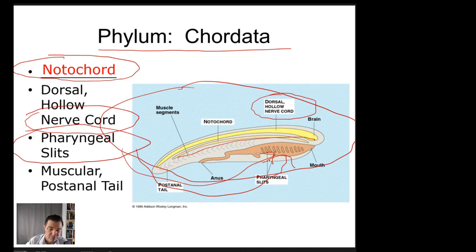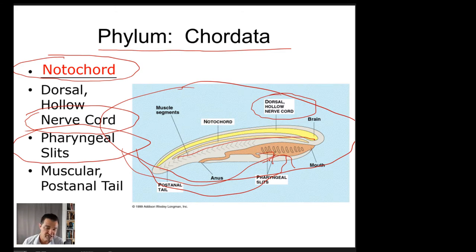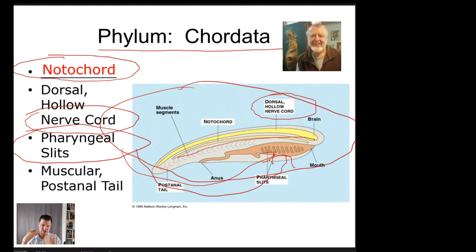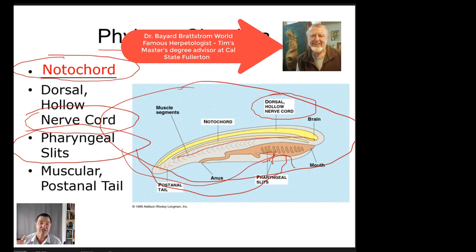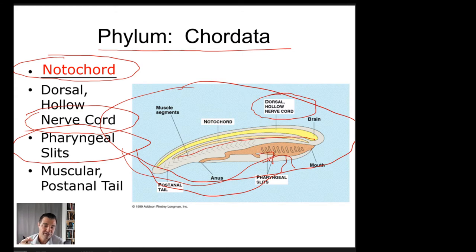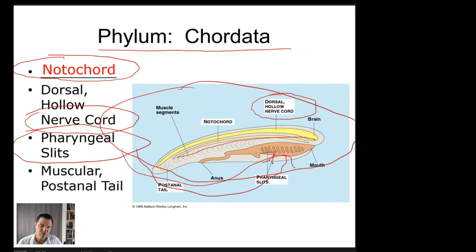My advisor, world-famous herpetologist Bayard Brostrom, was apparently born with openings from his pharyngeal gill slits that didn't close properly during development, so they were sewn closed. He wore a beard most of his adult life to hide the surgery scars. I always get asked — no, he could not breathe underwater. He didn't have gills. Pharyngeal gill slits are just openings; you don't breathe underwater through them.